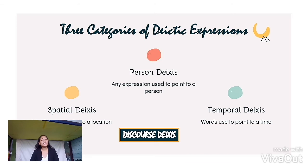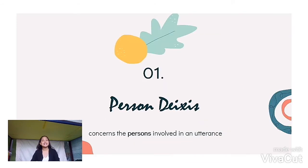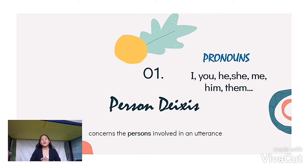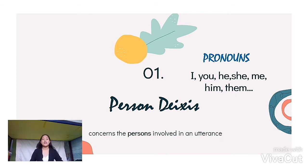Any expression used to point to a person is called person diaccess. So let's look for the examples of person diaccess. From here you can see: I, you, he, she, and me, or even him and them.